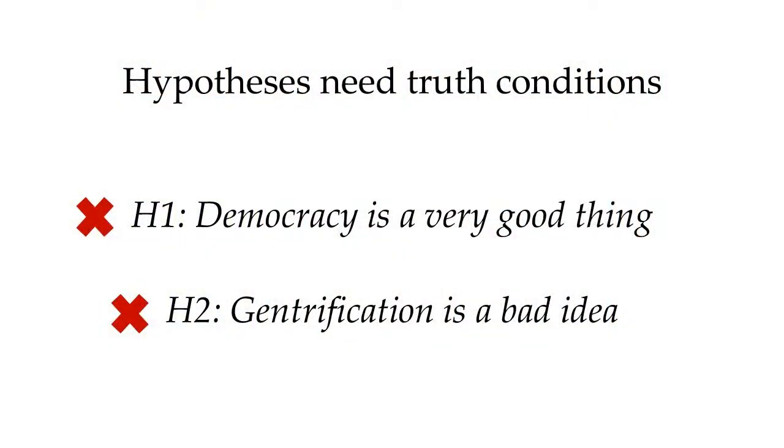Very vague and general hypotheses are unfalsifiable because they don't have truth conditions. For instance, you could certainly provide lots of reasons in support of your hypothesis that 'democracy is a good thing' or 'gentrification is a bad idea.' But no matter how many reasons somebody stacked up on the opposing side, they'd never be able to convince you otherwise if you were determined to hold onto 'yay democracy' or 'boo gentrification.' You can't test whether or not these statements are true — they're unfalsifiable.